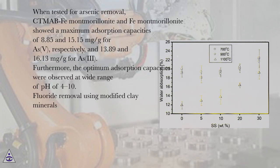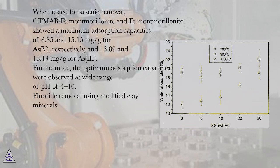When tested for arsenic removal, KMAB-Fe-montmorillonite and Fe-montmorillonite showed maximum adsorption capacities of 8.85 and 15.15 mg/g for As(V), respectively, and 13.89 and 16.13 mg/g for As(III). Furthermore, the optimum adsorption capacities were observed at a wide range of pH from 4 to 10.